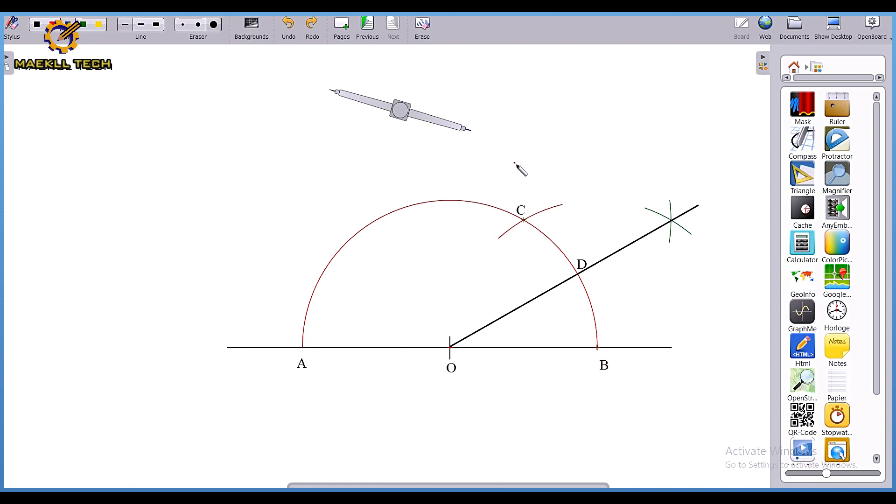Now in this video, we'll be bisecting B to D. Since B to D is 30 degrees and we need 15 degrees, we bisect B to D to give us 15 degrees.